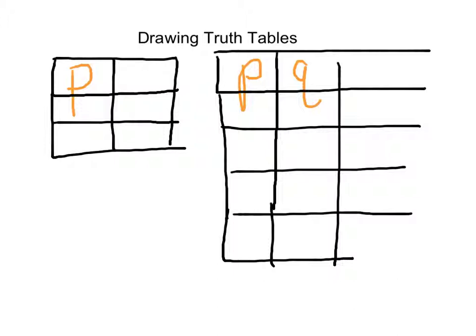So let me recap that again. One statement gives you two rows. Two statements, you have four rows.